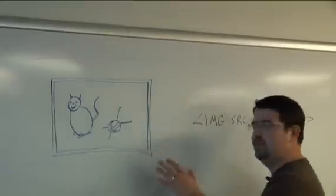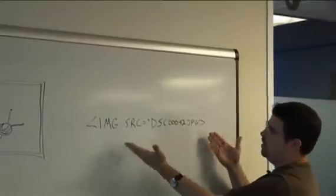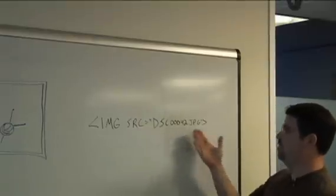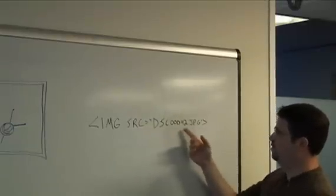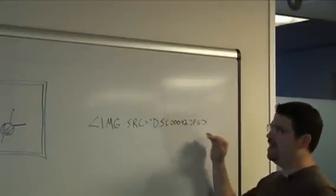Now let's see what this image might look like. If we move over here to the right, this might be a typical image source. You've got your image tag, you describe what the source is. Here's DSC because it's a digital camera, da-ba-ba-42.jpg.